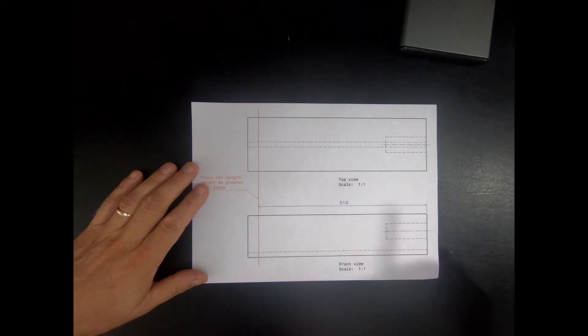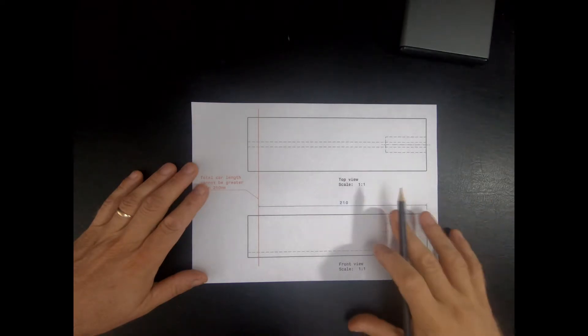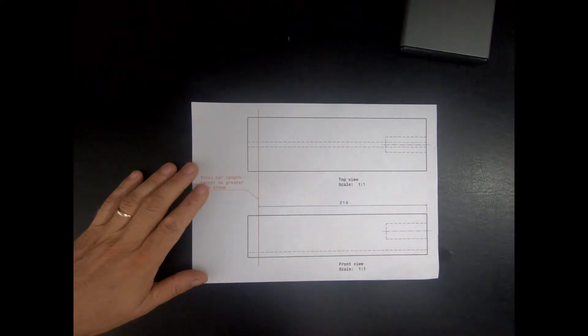Hi everyone, so today we're going to go through sketching a car design on paper first, and we always do this on paper before we start manufacturing the car just to help us get an understanding of what we're trying to do.